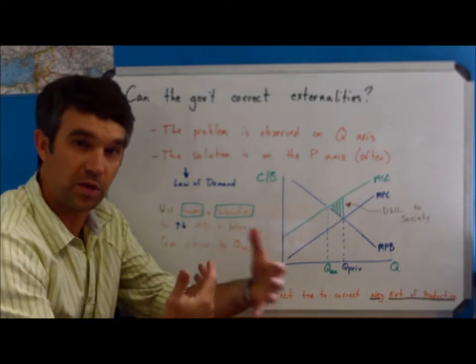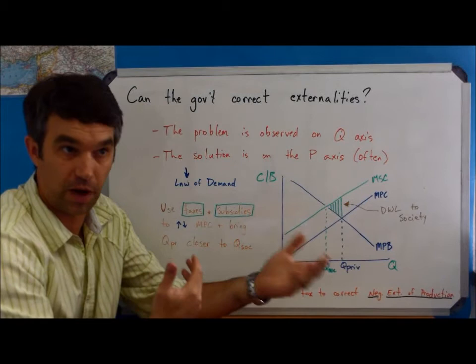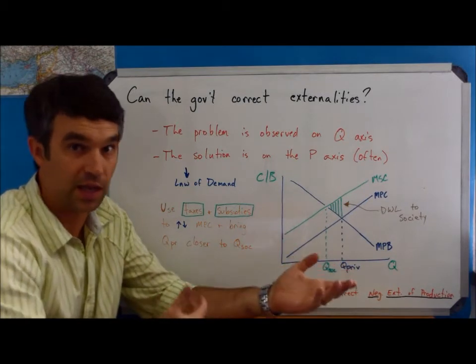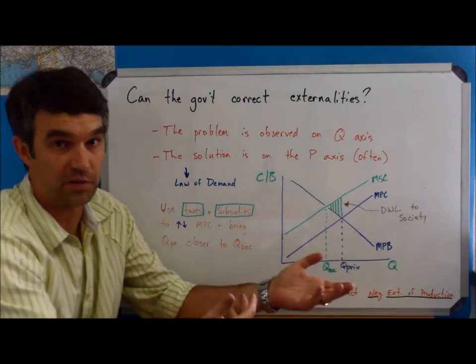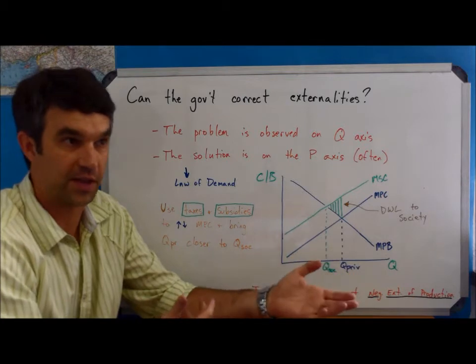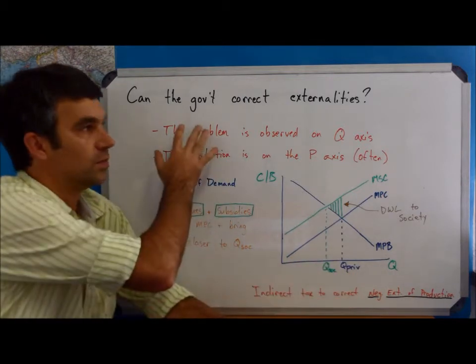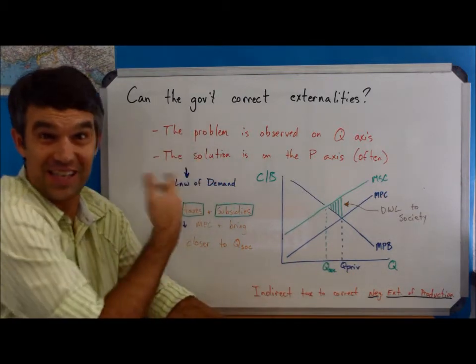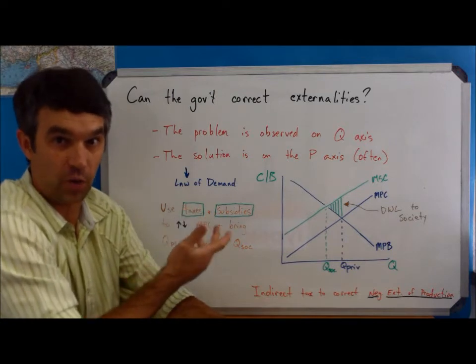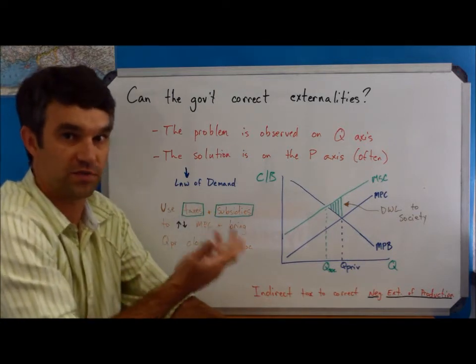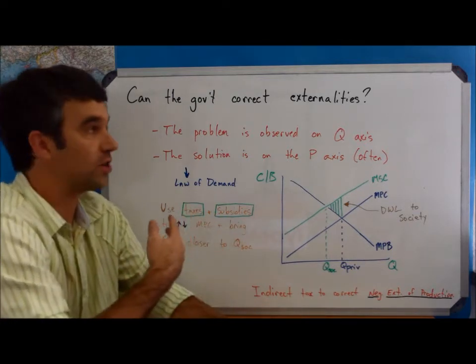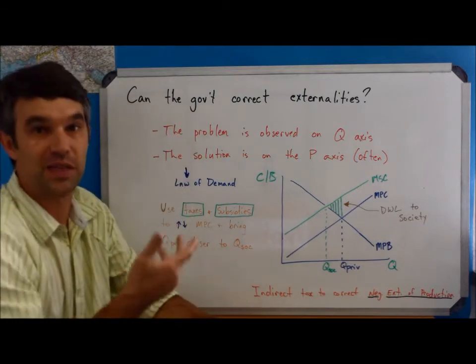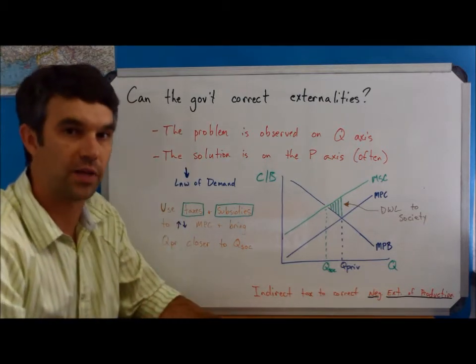Keep in mind where we're going. The first part of the unit, we talked about how the market is going to fix everything, and if the government gets involved, the government's going to screw things up. Well, now we've said the market actually isn't always going to get everything right. In fact, it's often going to fail. So that makes the question necessary, can the government then fix it? And we'll see how the government can do.